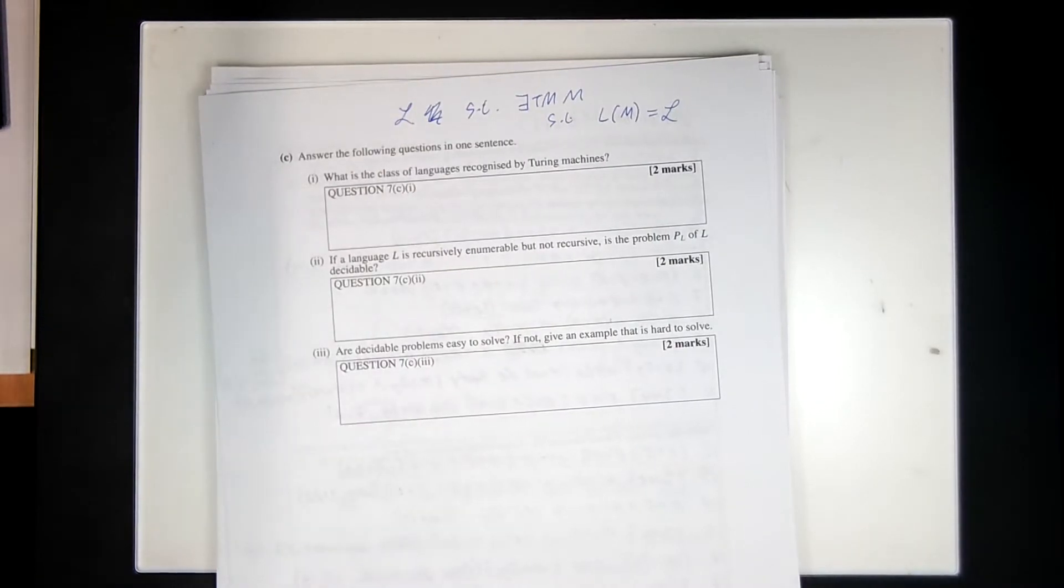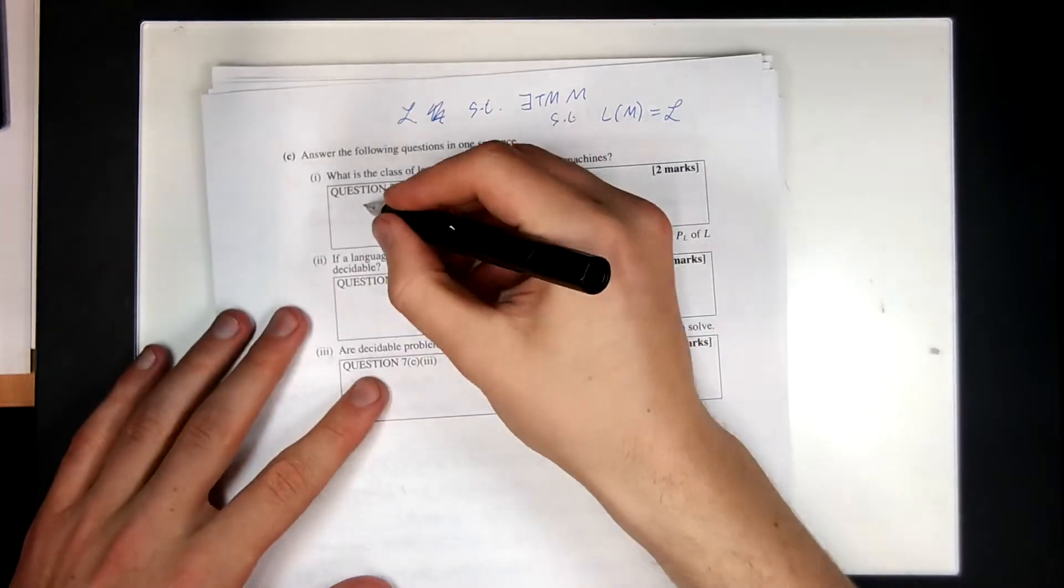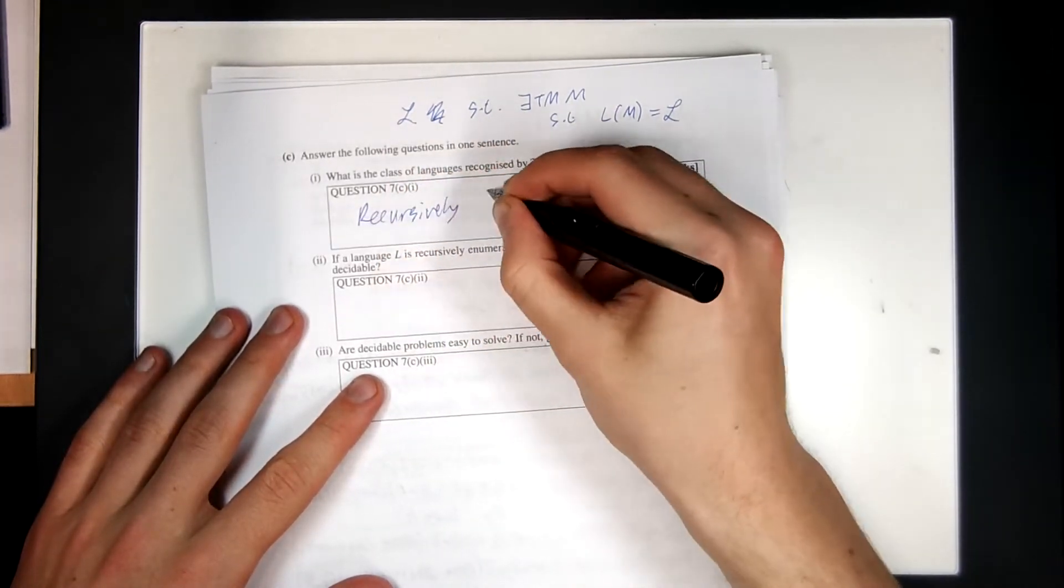Is it recursive or is it recursively enumerable? Well, if it's recursive, that guarantees the machine is total, that is it always halts. If it's recursively enumerable, that just guarantees a Turing machine exists. And that's all we need for this. So what's the class of languages? It's the recursively enumerable languages.